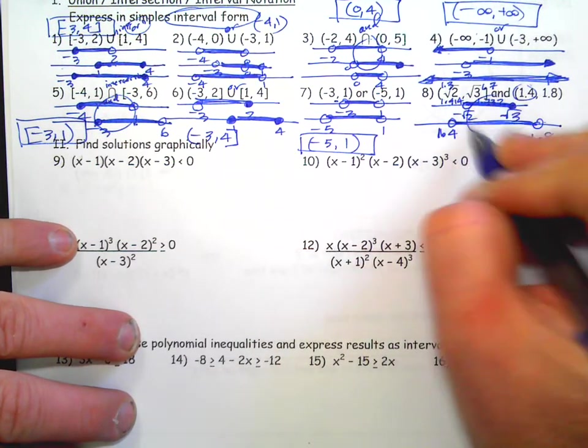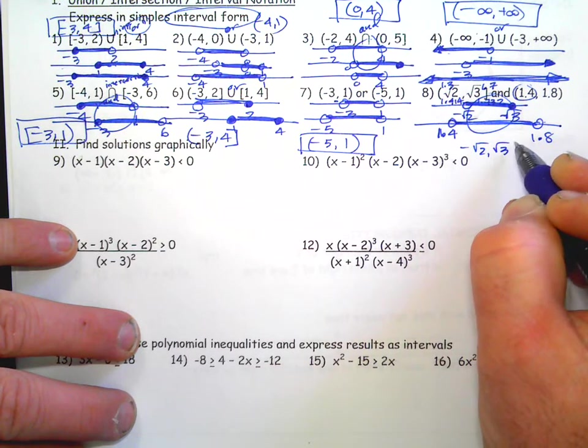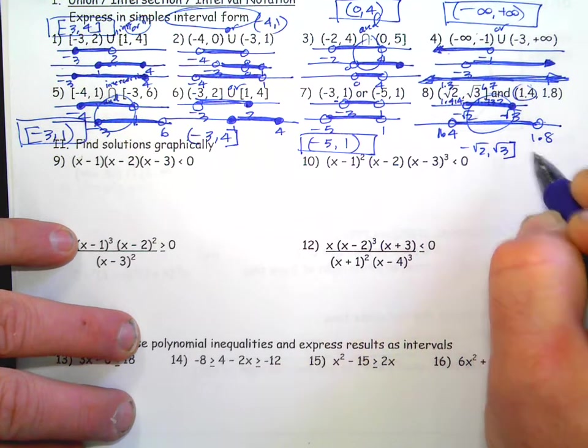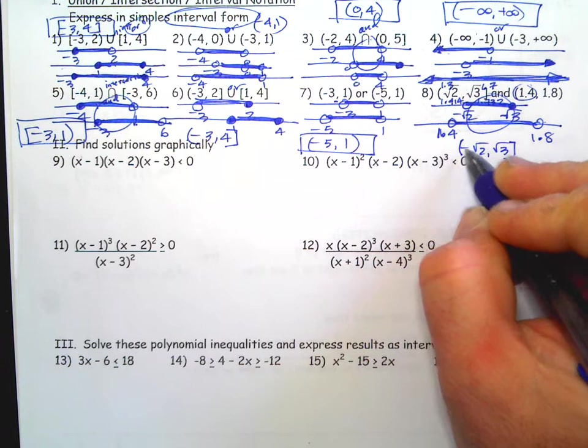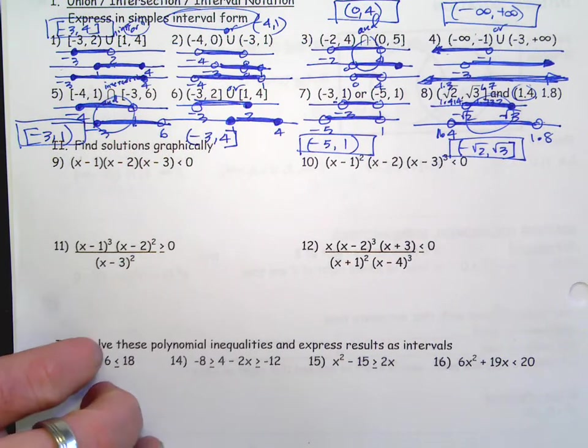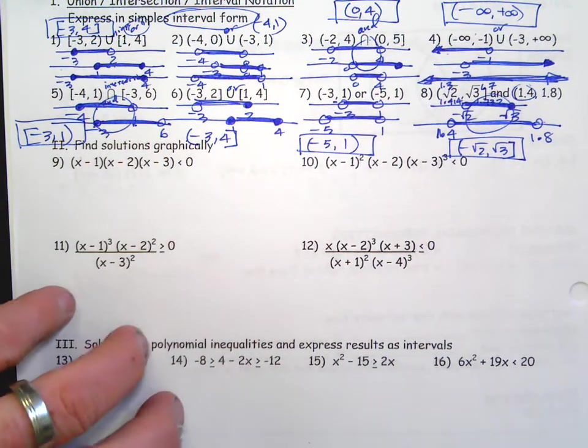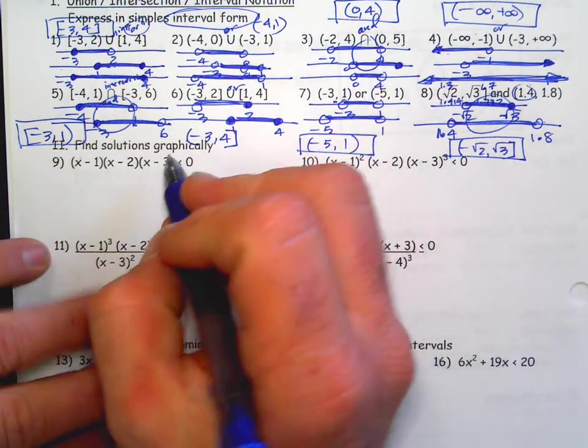And then we're shading in between, right? And this is and, so they have to both be true. So it's going to be square root of 2 to square root of 3. Bracket on the square root of 3, parenthesis on the square root of 2. So, anyways, that's just a little practice with interval notation and compound inequalities, compound conditionals.